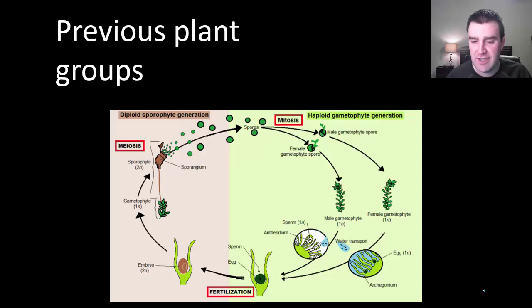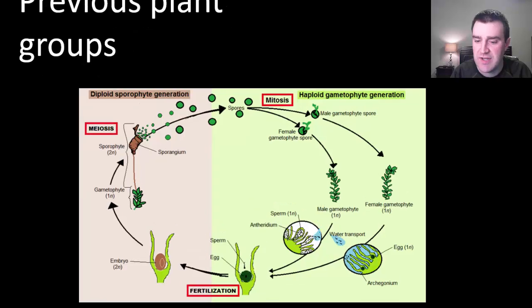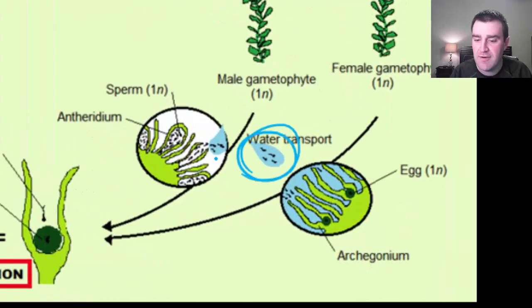If you recall when we left off, we talked about how ferns and moss both had a major restriction. They have to live in areas that have a lot of water directly on the ground in order to help transport their sperm from the sperm producing centers to the egg of another member of their species so that they can sexually reproduce.